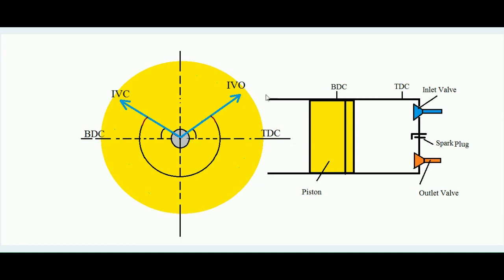So to summarize the inlet valve practical timing: the inlet valve starts opening a few degrees before TDC because the valve needs time to fully lift from its seat. It remains open a few degrees after BDC because the piston moves very fast, and the charge needs additional time to fully fill the cylinder. If the inlet valve closed exactly at BDC, some vacuum would remain inside the cylinder, which is undesirable. In the compression stroke, both valves remain closed.